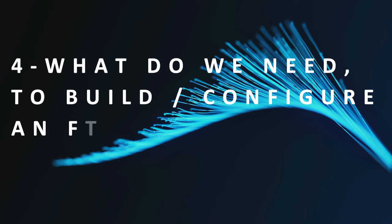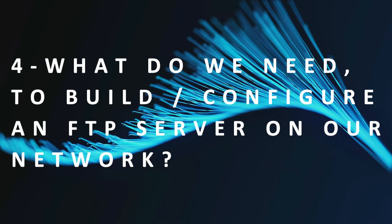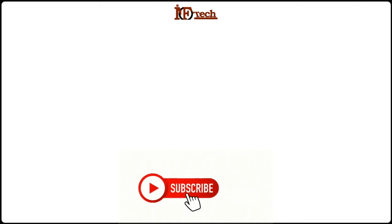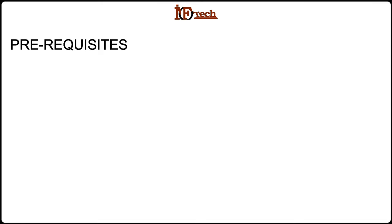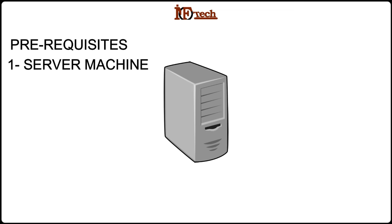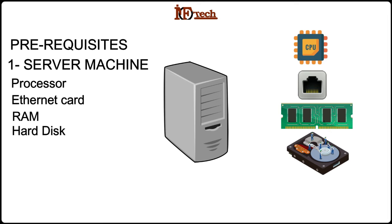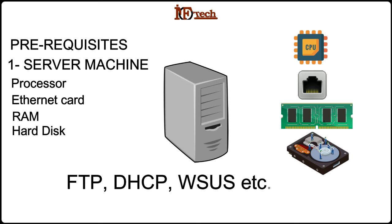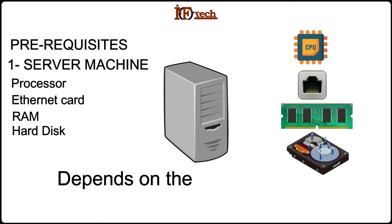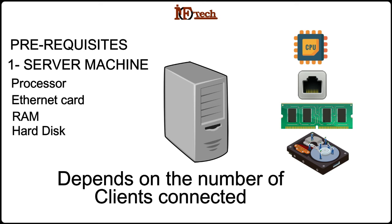To build or configure an FTP server on our network, we will need the following resources. Number one: a server machine or server PC. Machines used for any server configuration must have high specifications like a high-speed processor, high-speed Ethernet card, enough RAM, and a hard disk with high speed and large capacity. The greater the number of clients connected to the FTP server, the higher the required resources on the server PC.